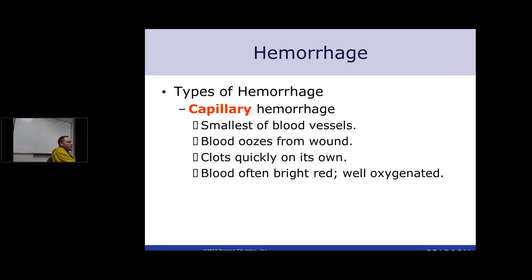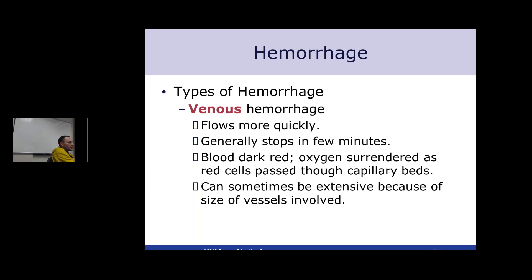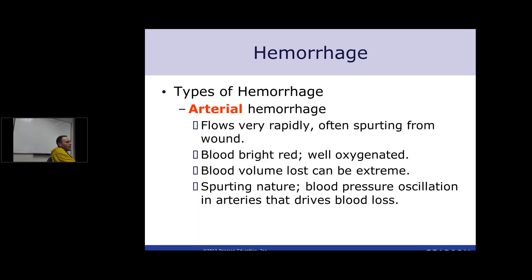Types of hemorrhage: capillary hemorrhage is minimal oozing, clots off quickly, self-regulatory — not a major problem. Venous hemorrhage flows more quickly, the blood is dark, and can be extensive depending on which vein is cut — you can bleed to death rapidly from a jugular vein laceration, so take venous hemorrhages seriously. Arterial hemorrhages are the rapid, spurting, bright red bleeds — you have to fix them quickly or too much blood is lost.